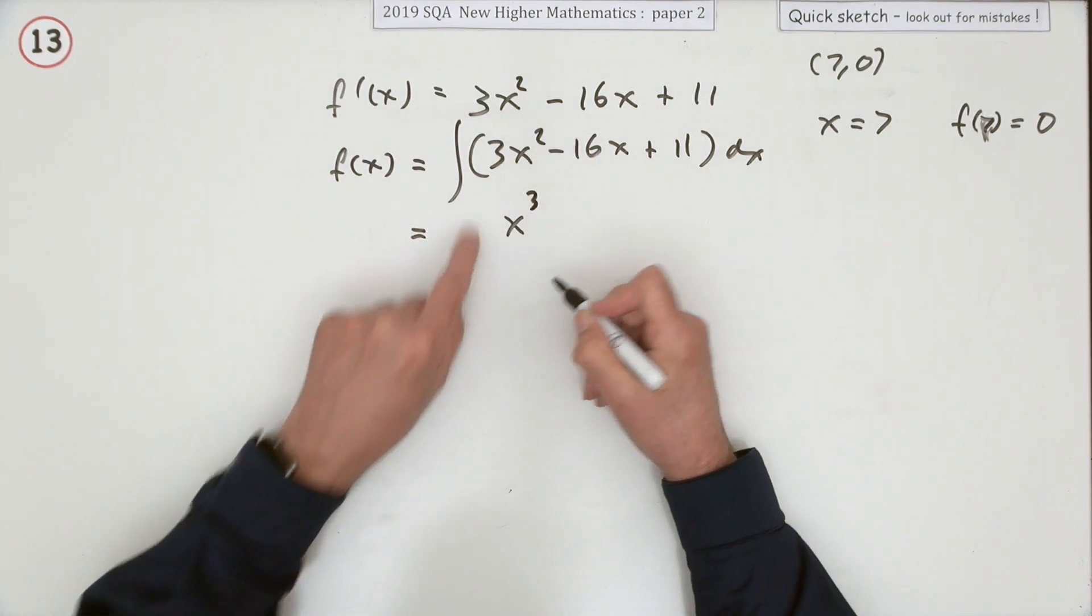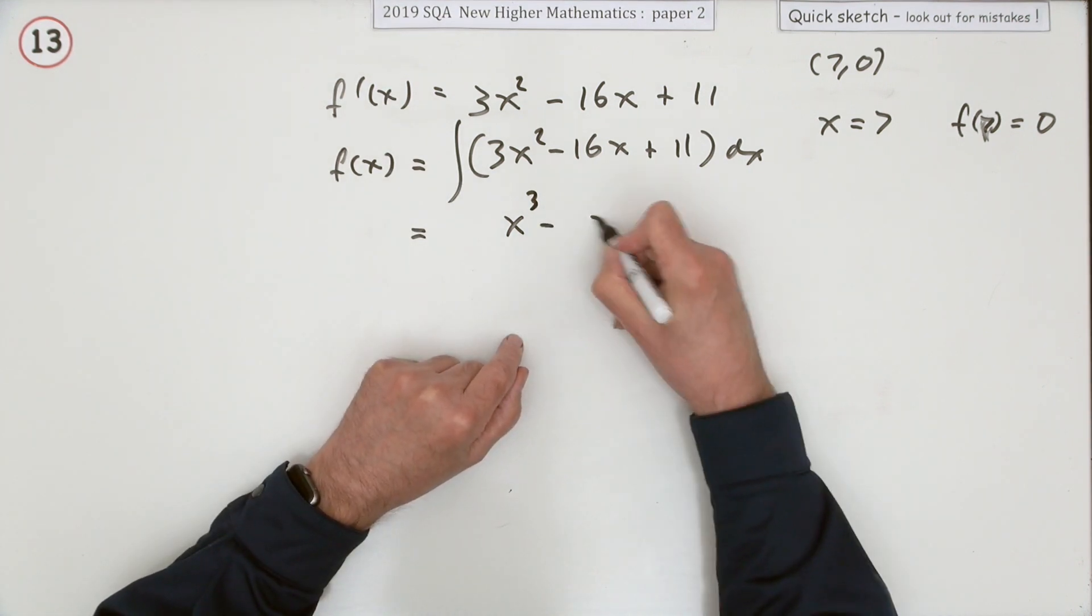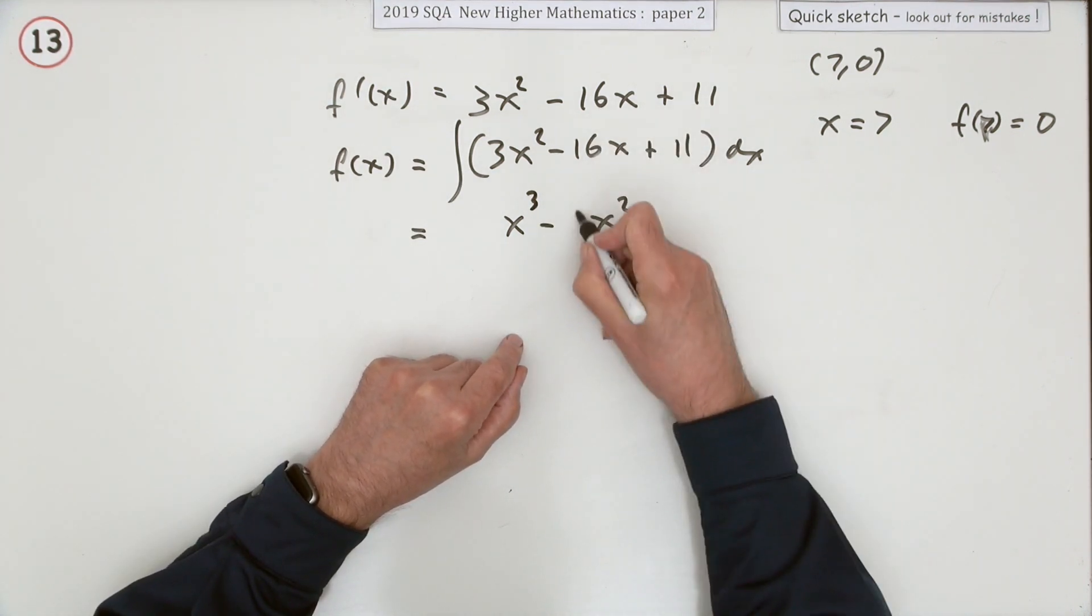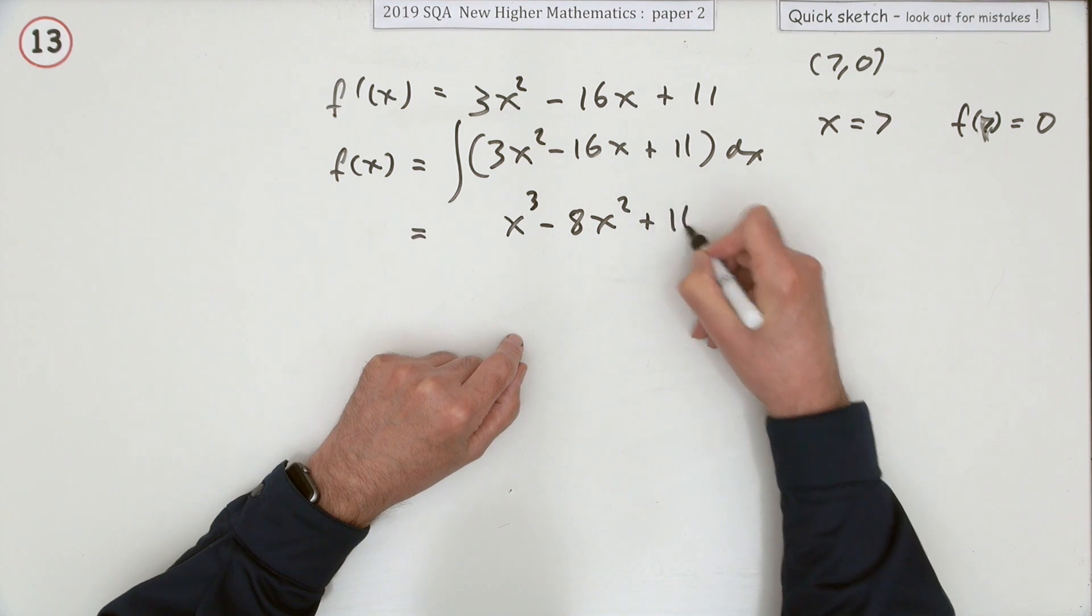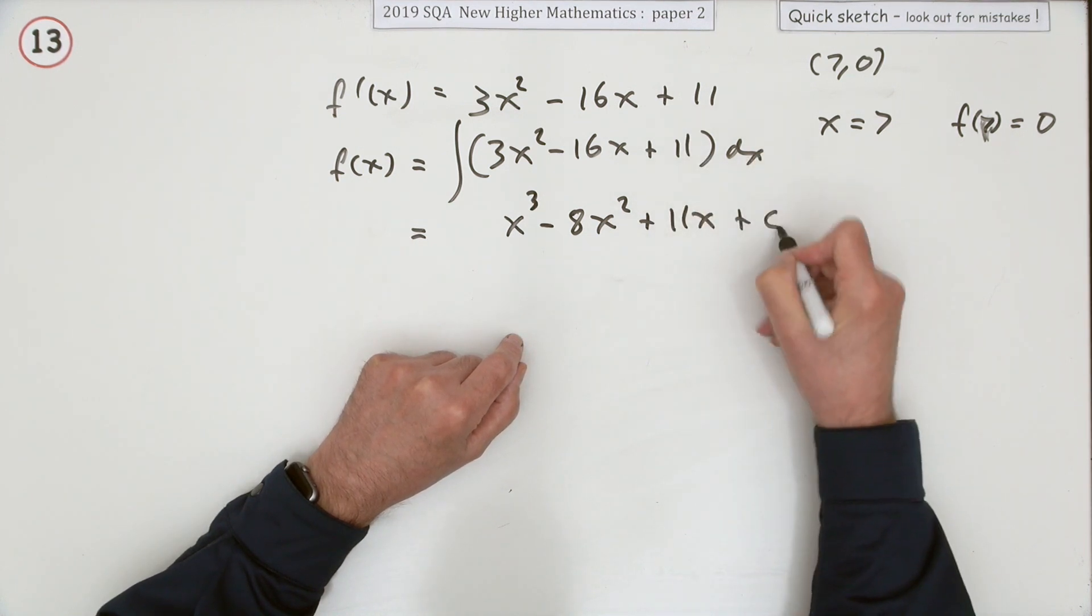Add one to the power, divide by the power. Well that's just a one. Add one to the power two, divide by the power, that's eight. That goes to 11x. Don't forget plus c.